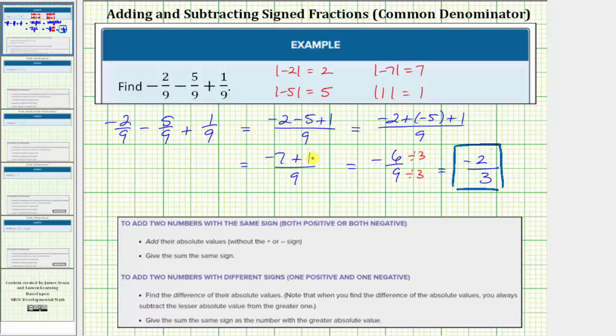And then for negative seven plus one, we can think of this as a loss of seven dollars and then a gain of one dollar, leaving us with a loss of six dollars or negative six. So if we can make sense of adding and subtracting signed numbers using a money analogy, that can sometimes help our understanding of adding signed numbers.